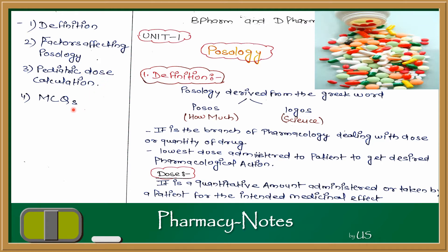The definition of posology: posology is derived from the Greek word — 'posos' meaning 'how much' and 'logos' meaning 'science'. Basically, posology is related to how much dose is given to produce a sufficient pharmacological action.